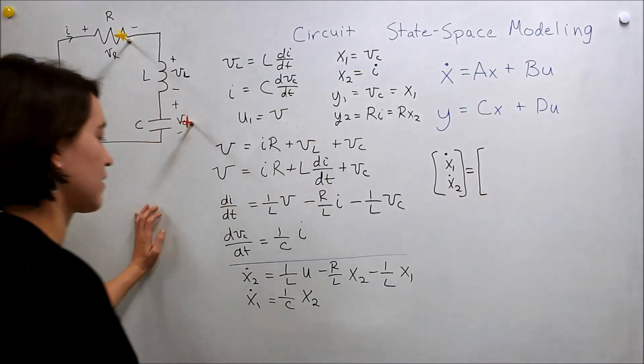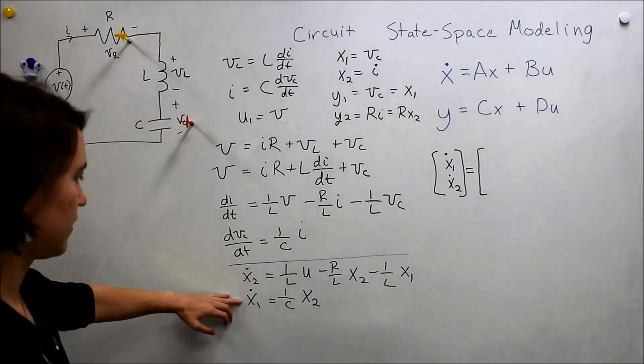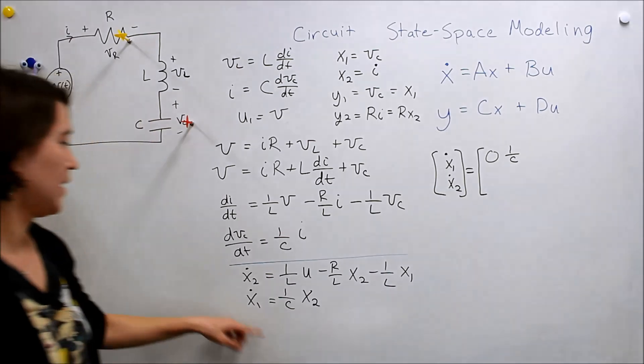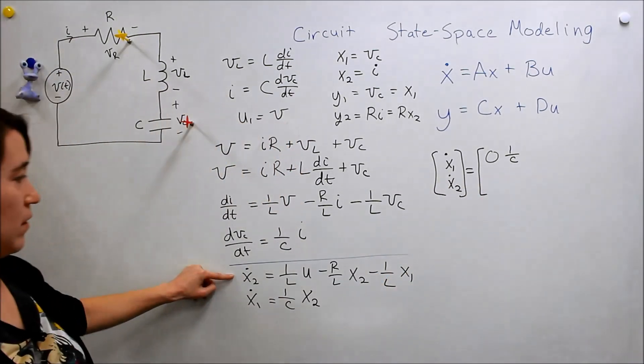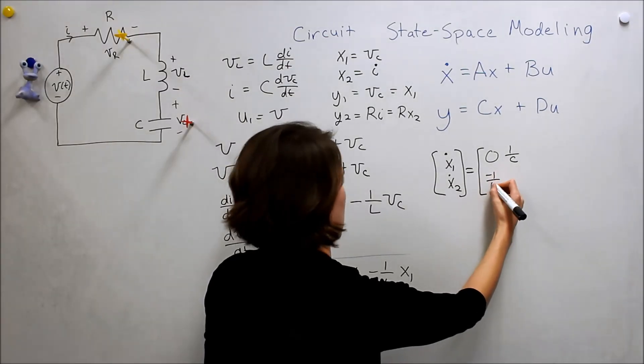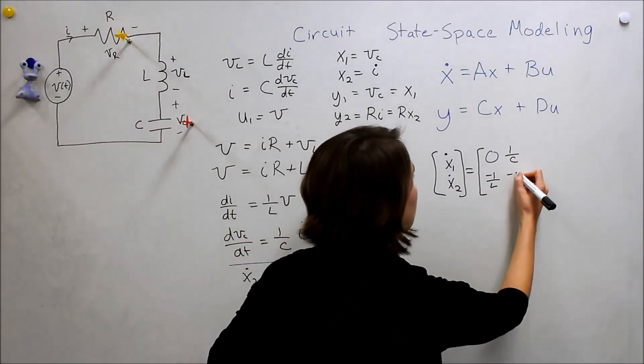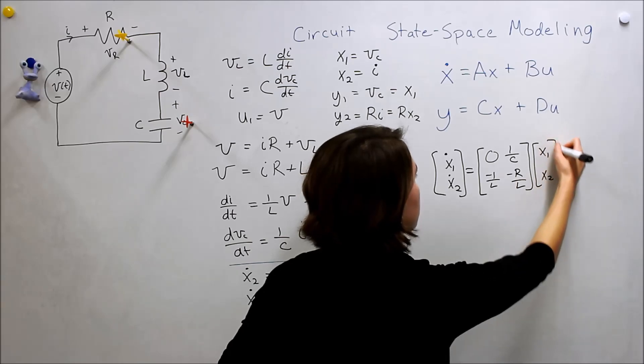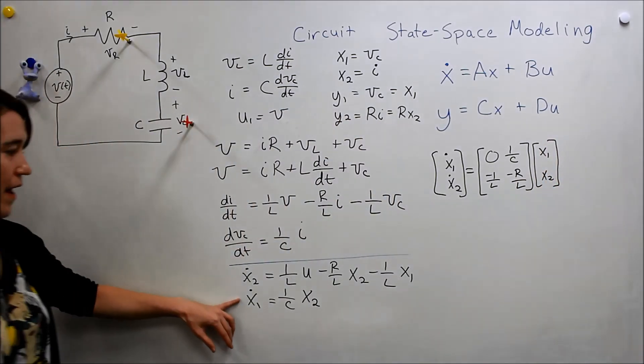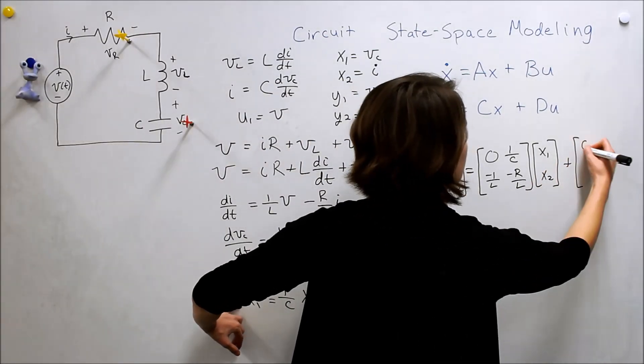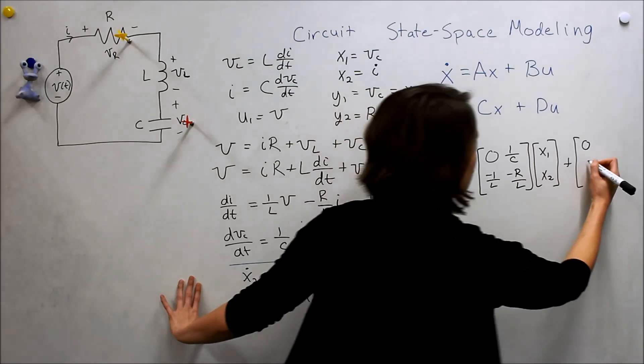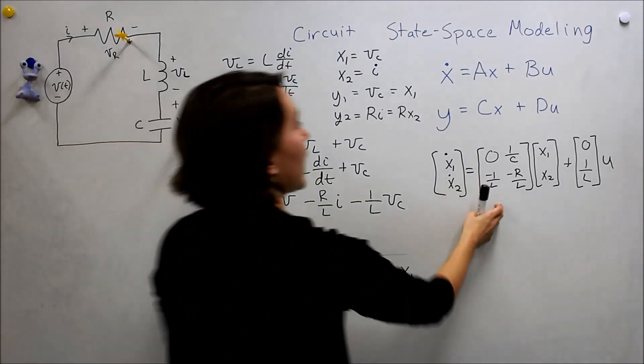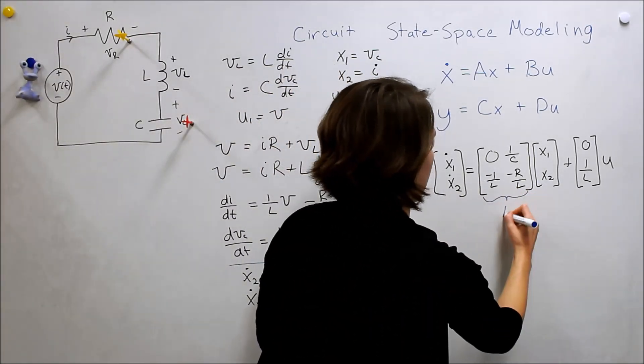Now we need to figure out our A matrix. I see X1 dot only relies on X2, so we'll have a 0, 1 over C. And now we're going to fill in this part of the matrix, so we're going to have a negative 1 over L, and then a negative R over L, times our states X1 and X2 here. And now we have to look at inputs. X1 does not depend on U, put a 0 here. X2, we have 1 over L times U. So here's our A and here's our B.